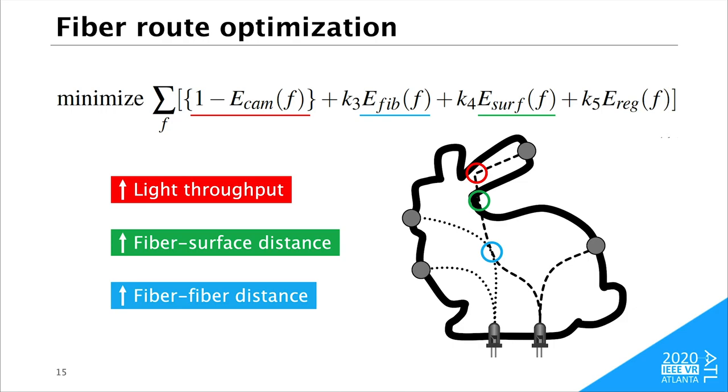Finally, the fiber route is optimized by minimizing this objective. The first term works to increase the light throughput. The second term works to increase the distance from each fiber to the surface. The third term works to increase the distance between fibers transmitting different blinking patterns. The last term is a regularizer.